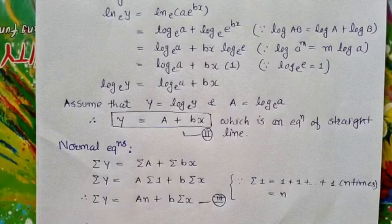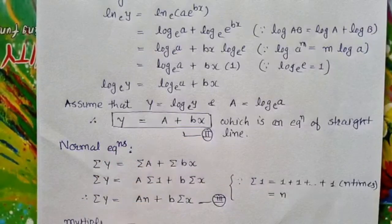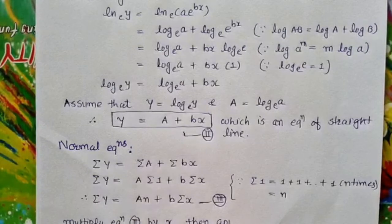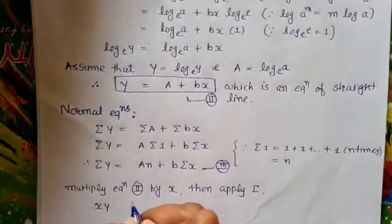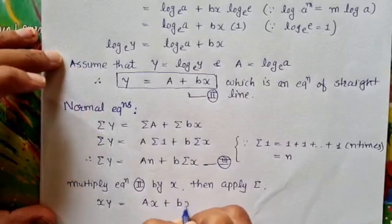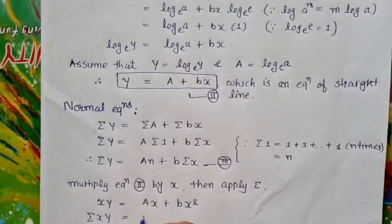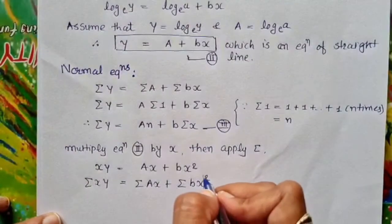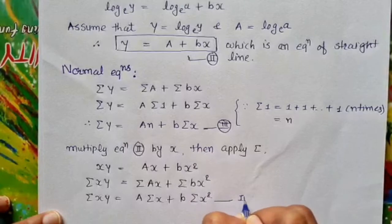To write the other normal equation, we multiply equation 2 by x and then apply summation to both sides. This gives summation(x·Y) = A·summation(x) + B·summation(x²), which is equation number 4.